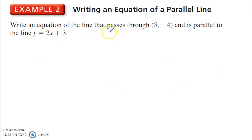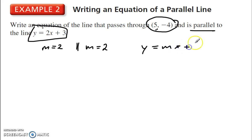Write an equation of the line that passes through this point and is parallel to this line. Well, this line has a slope of 2. So a parallel slope to that, m would also equal 2. Going through this point here, we can use point slope form or slope intercept form. Let's see. I'll use slope intercept form. Y equals mx plus B.